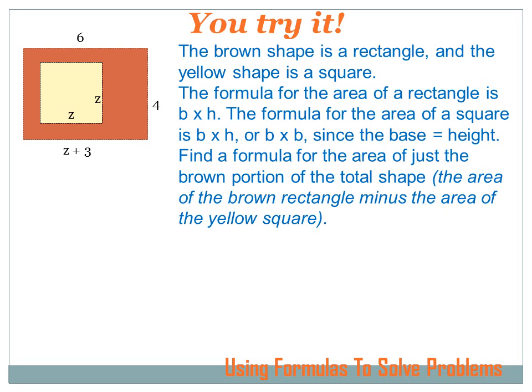This one's a little harder, but I want you to try it. The problem says the brown shape is a rectangle, and the yellow shape is a square. The formula for the area of a rectangle is base times height. The formula for the area of a square is also base times height, or base times base, since the base equals the height. Find a formula for the area of just the brown portion of the total shape, the area of the brown rectangle minus the area of the yellow square. Hit the pause button, try this problem on your own, and then hit the forward key to move on to the answer.